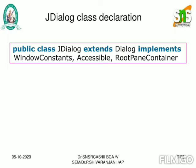The JDialog class declaration uses the keyword public, followed by the class name JDialog. It extends the superclass Dialog and implements WindowConstants, Accessible, and RootPaneContainer, so all those elements should be accessible inside the dialog controls.